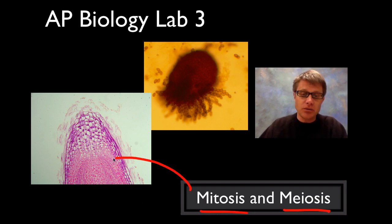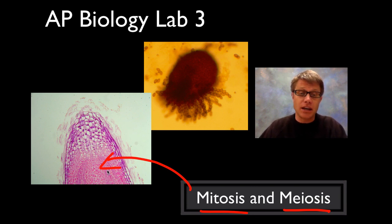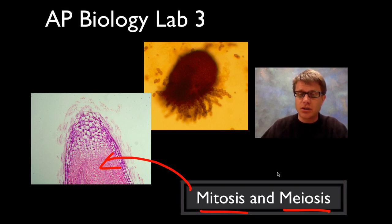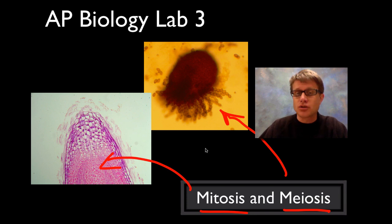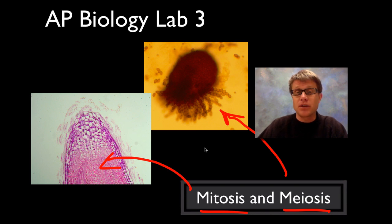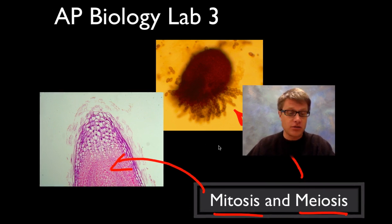In the mitosis portion, we're going to look at cells in a root — in this case an onion root — and see them actively dividing, figuring out how much time they spend in each of the different phases of mitosis. Then in the meiosis portion, we're going to look at ascospores produced by a specific type of fungus called sordaria, and figure out the percent of crossover — and thereby figure out how far apart genes are on the chromosome.